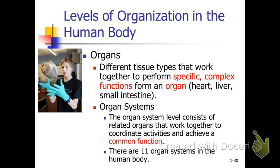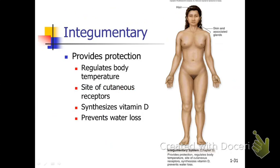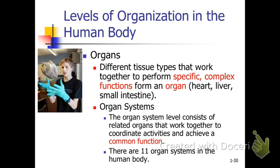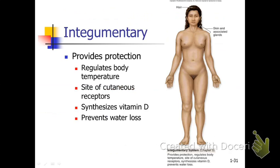Those tissues are the building blocks of organs — for example, liver, heart, kidney, brain. And those organs combine into those 11 different organ systems.